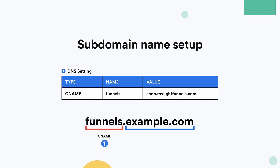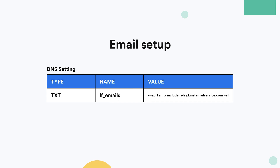If you have a subdomain, all you need to do is one DNS setting: the type is going to be CNAME, the name is going to be the subdomain itself, and the value is going to be shop.mylightfunnels.com. Now there is one last setting you need to add in order to allow LightFunnels to send emails on your behalf — order confirmation emails, checkout abandonment emails, and so on. The type will be text, the name will be LF_emails, and you can copy the value from your account settings or from our documentation.